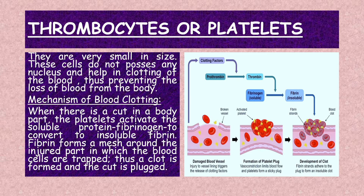Mechanism of blood clotting: when there is a cut in a body part, the platelets activate the soluble protein fibrinogen to convert to insoluble fibrin. Fibrin forms a mesh around the injured part in which the blood cells are trapped, thus a clot is formed and the cut is plugged.